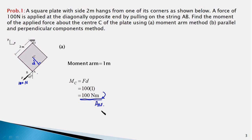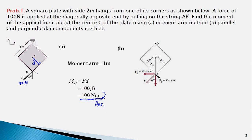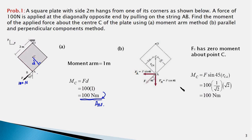Now we shall find the moment of this force using the perpendicular and parallel components. We break the force into its parallel and perpendicular components. The parallel component passes through point C, so it has no moment about point C. The perpendicular component is F sin 45°, and the moment arm for this component is √2 meters (the distance rCA). Therefore, the magnitude of the moment of the perpendicular component is F sin 45° × √2 = 100 newton-meters, acting in the clockwise direction.